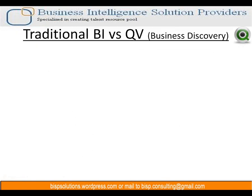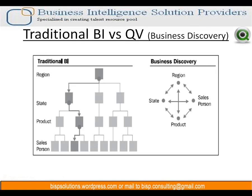Traditional BI tools versus ClickView — ClickView is a business discovery tool, so let's justify that. The difference is in how navigation works. In traditional BI tools, when you have four different dimensions — region, state, product, and salesperson — you have to select one particular value from each dimension in sequence to see data for that combination in the chart. You select region, then state, then the products available in that state, then the salesperson selling those products. This is the fixed path followed in traditional BI tools.